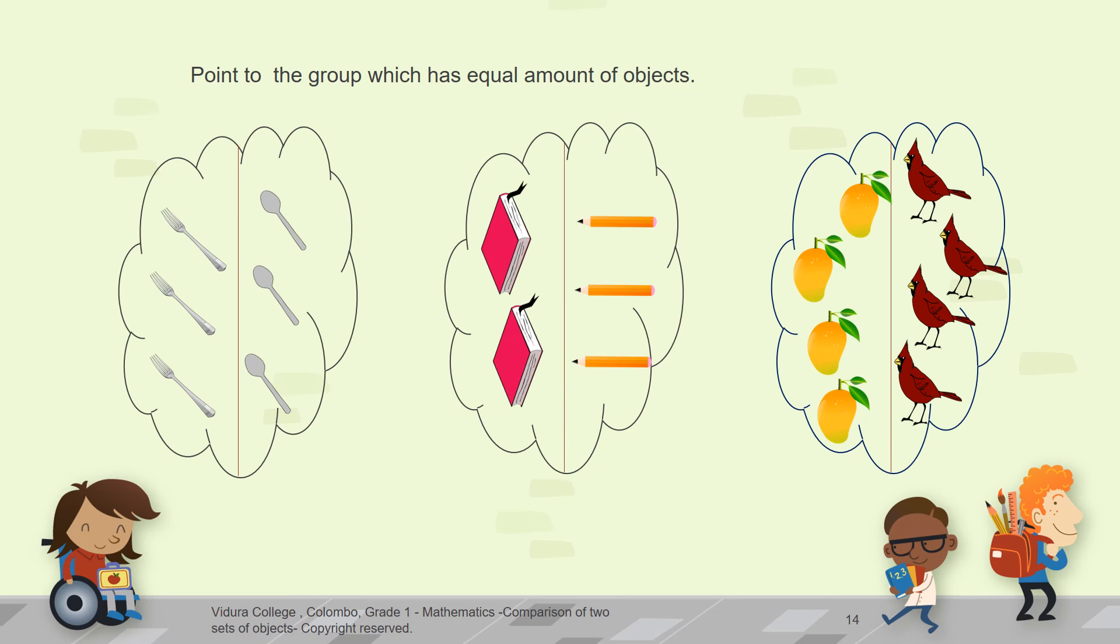Next one is also new to you. First, you can check the pictures. First sets of pictures are spoons and forks. Then books and pencils. Then mangoes and birds. Now compare the object sets. Finally, find out which has equal number of objects and point it out.